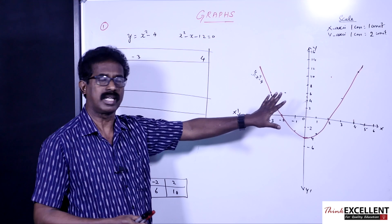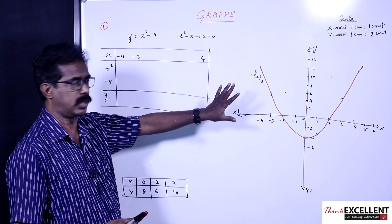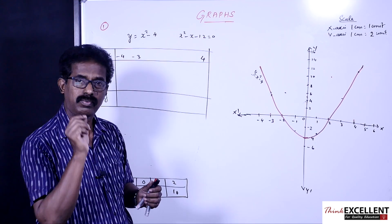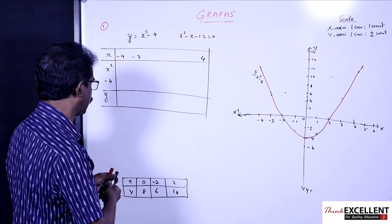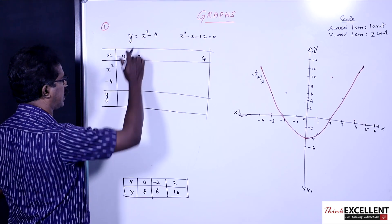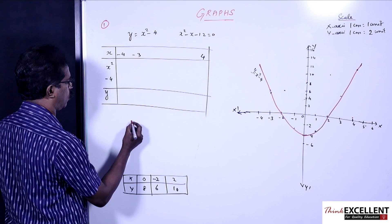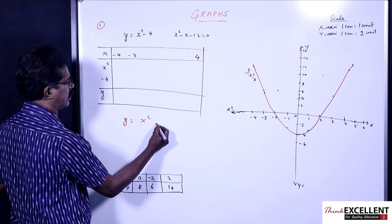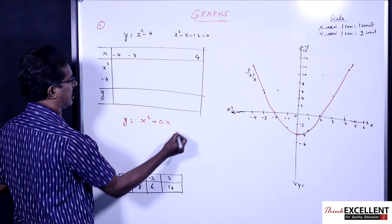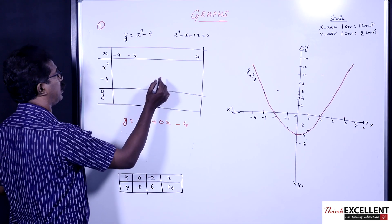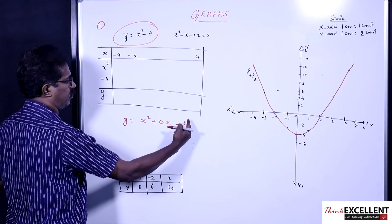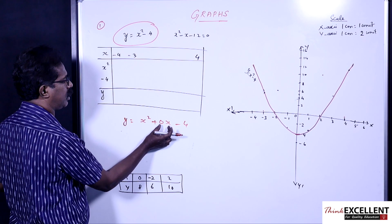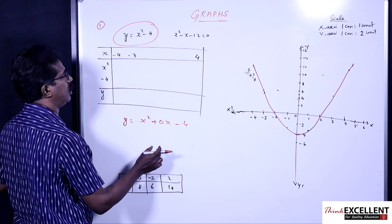After drawing the graph, you know up to that point. Do all the table calculations and draw the graph. Now, to solve the other equation, some more steps are needed. First, write the equation whose graph you've drawn: y = x² + 0x - 4 (since x is missing, you leave a space or write +0x). Below that, write the equation you are supposed to solve.